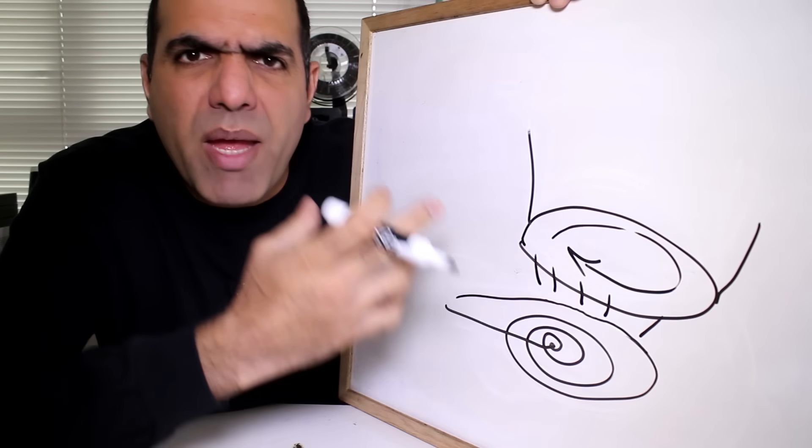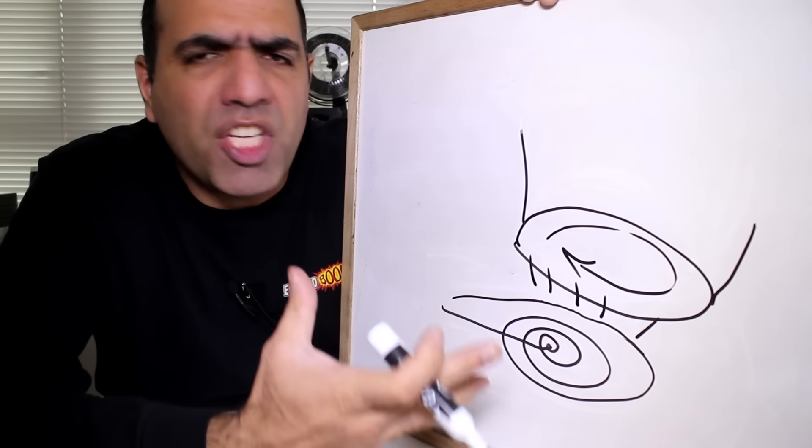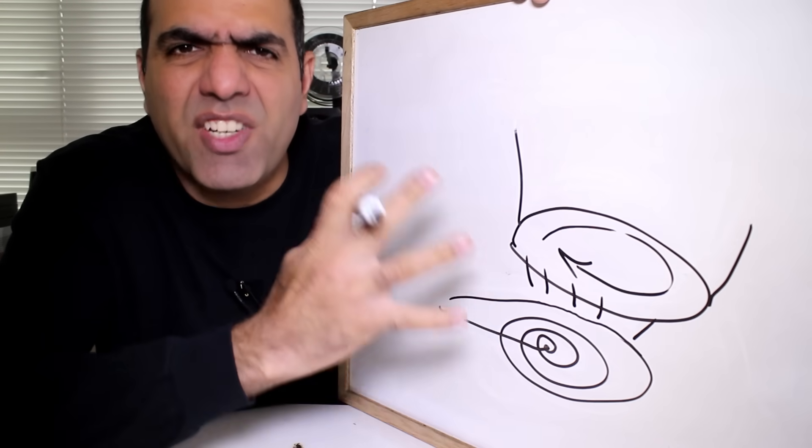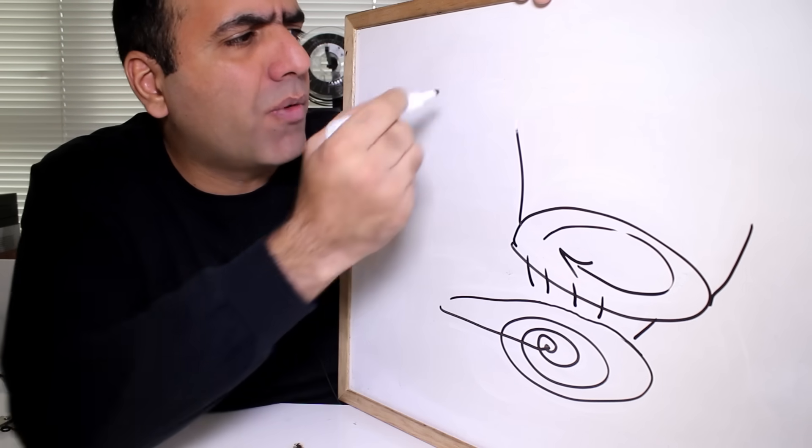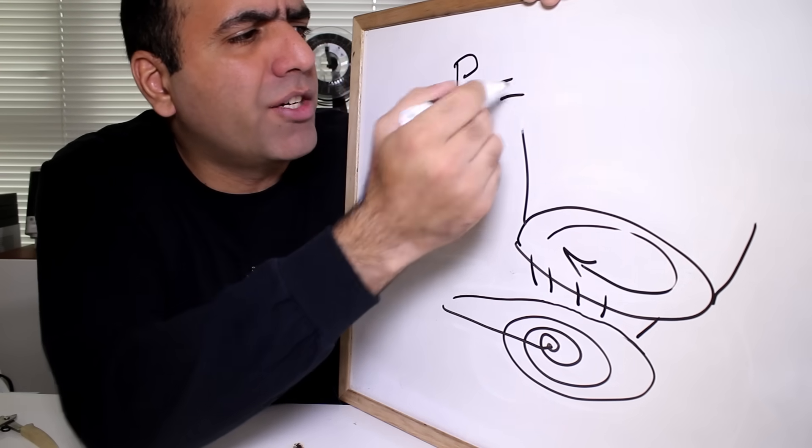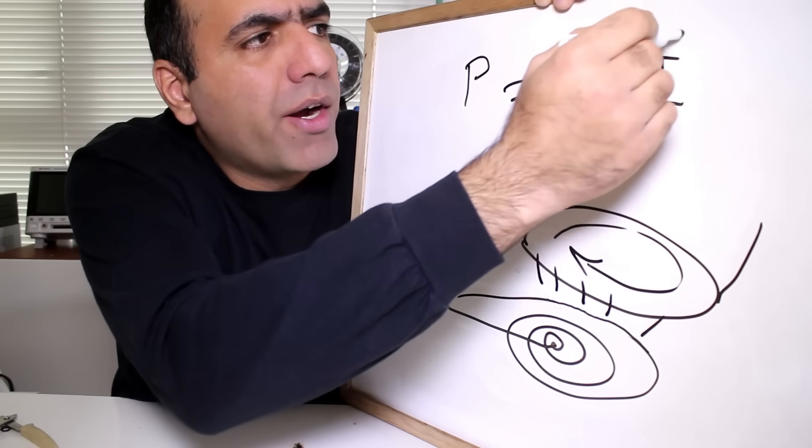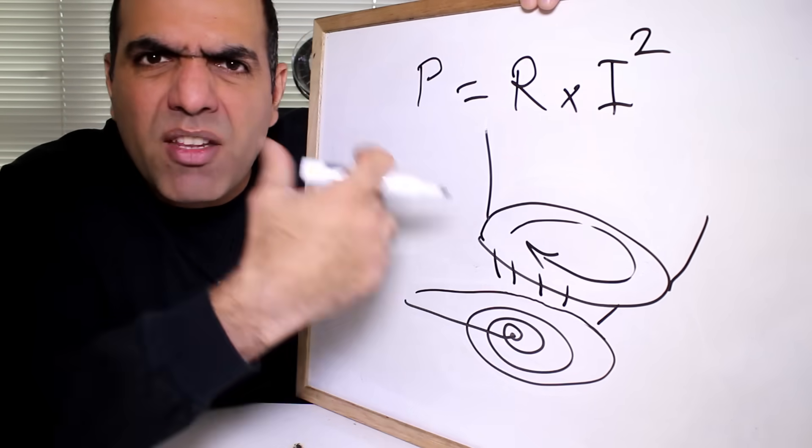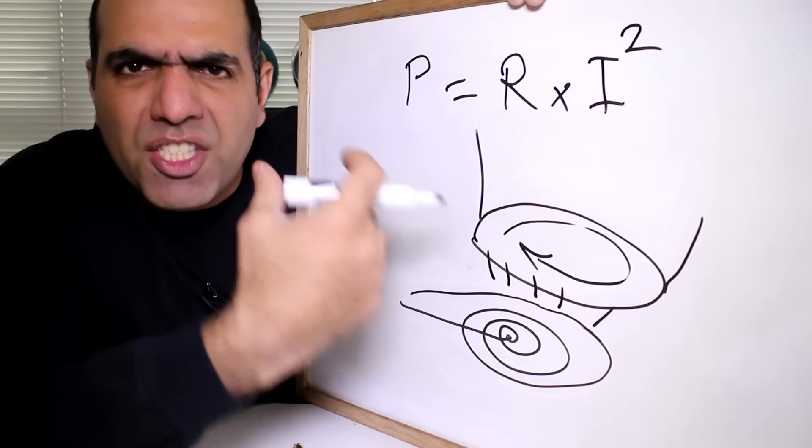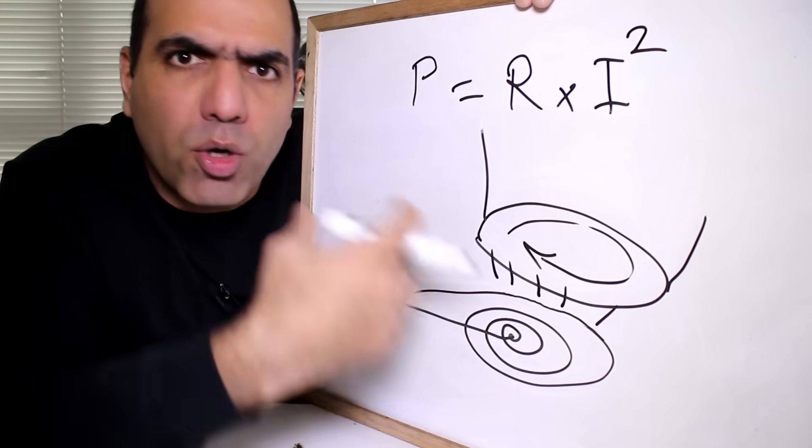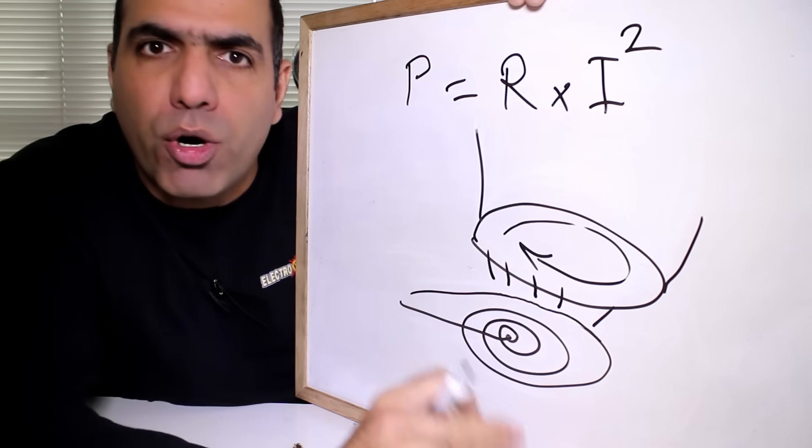But if the pot is made of aluminum or copper, it doesn't generate significant heat because the resistance is very small and the power converted into thermal energy is equal to resistance times current squared. But if the pot is made of cast iron or ferromagnetic steel, because its resistance is much higher than aluminum or copper, it heats up much more.